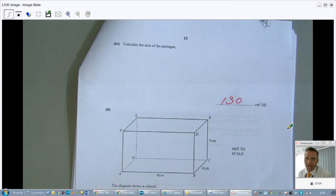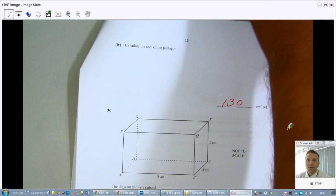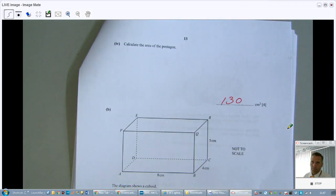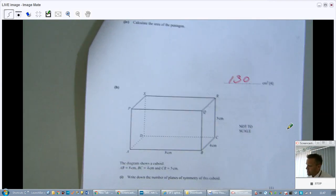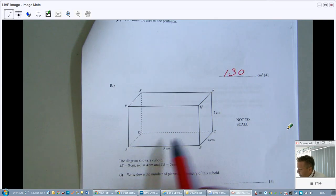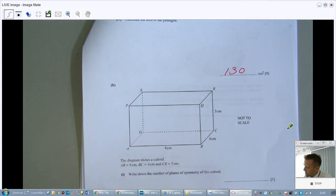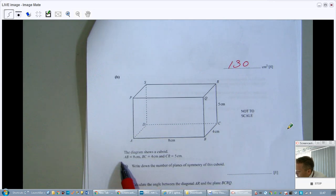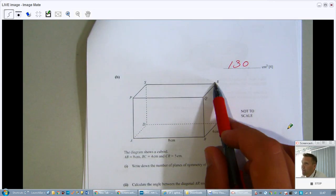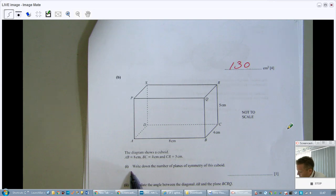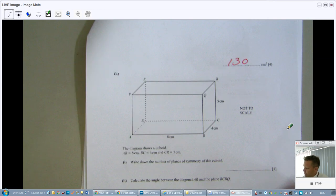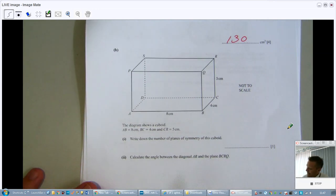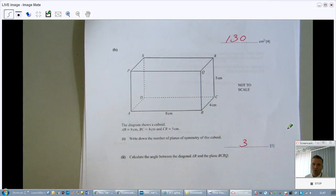Alright, so here we continue again. Must be part four now that we are solving this entire past paper together, Paper 43 2018 May/June. I'm Mr. John from explainingmath.com. I think I finished by saying this is clearly a 3D trick question, it's a cuboid 8 by 4 by 5. They say first of all write down the number of planes of symmetry of this cuboid. Well, that's maybe for one point, just something you want to remember: the cuboid has three planes of symmetry.